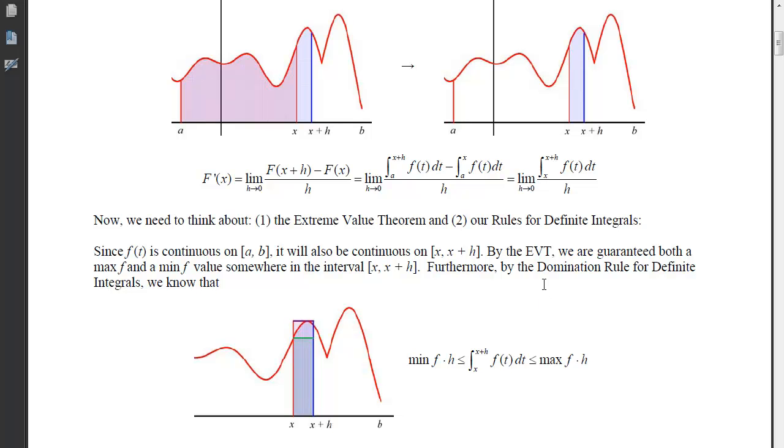Furthermore, by the domination rule for definite integrals, we know that if I take the smallest y value and create a rectangle, then that accumulation here, which is the smallest or the min f times the width of this, which is h, will be less than the true accumulation, which in turn will be less than that maximum y value times the width, which is h. So the minimum f times h and the maximum f times h will trap this integral that we have up here.